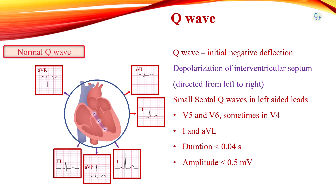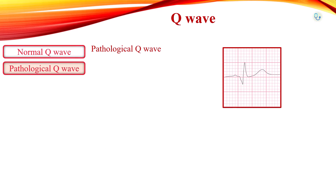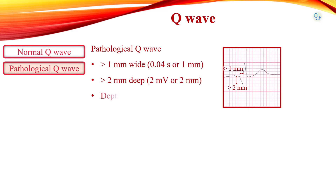The criteria for pathological Q-waves are: duration more than 40 ms or more than 1 small square; more than 2 mm deep; amplitude of the Q-wave more than 25% that of the QRS complex in the same lead; or the presence of Q-waves in leads V1 to V3.